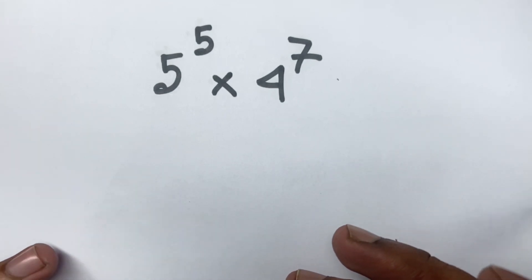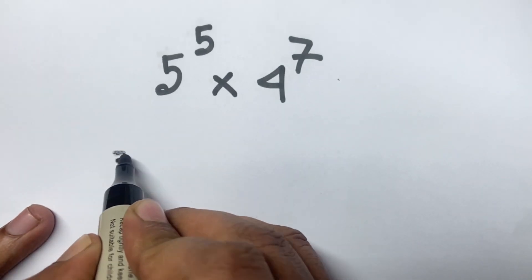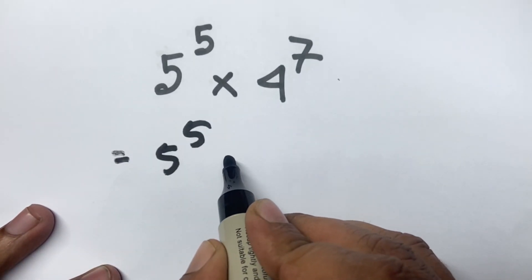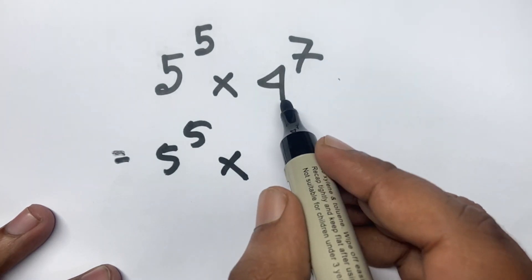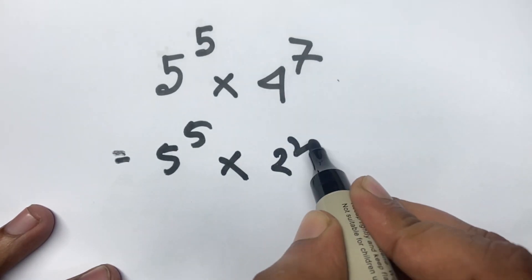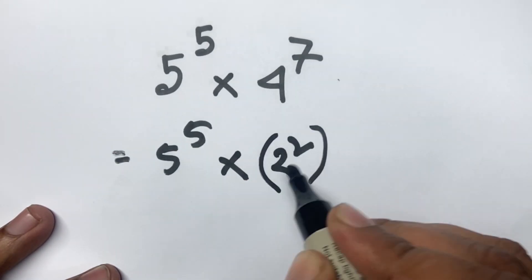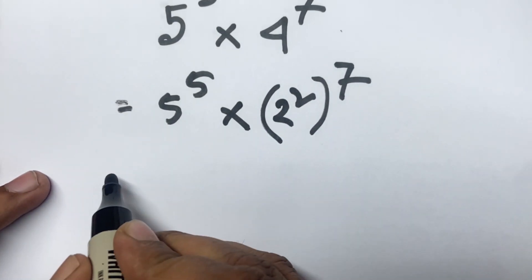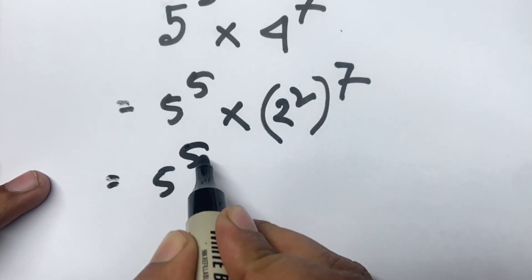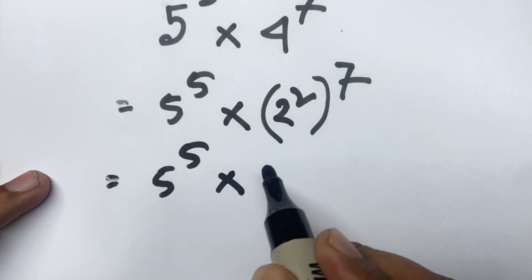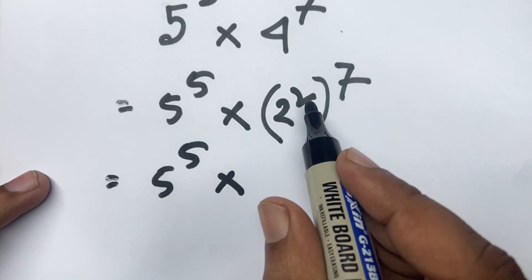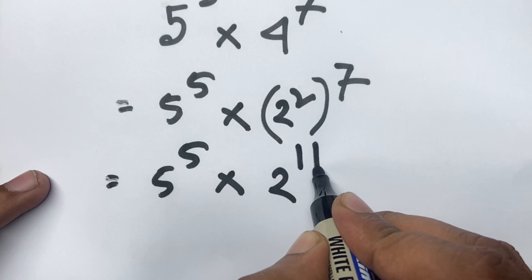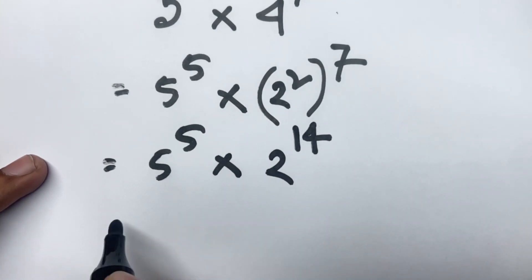First, I can see here is 5 to the power 5 times 4 to the power 7. I can see easily 2 squared equals 4, so 4 to the power 7 becomes 2 to the power 14. Now here is 5 to the power 5 times 2 to the power 14.